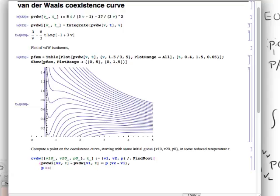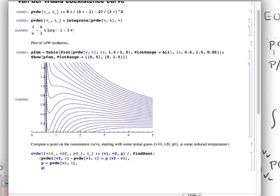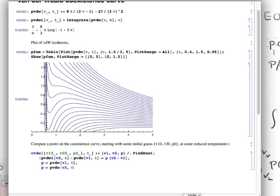as I said, P times V2 minus V1. That's the first equation. The second one is that the coexistence pressure is the van der Waals pressure at V1. And, the third equation is that it is also the pressure at the corresponding molar volume of the gas, V2.